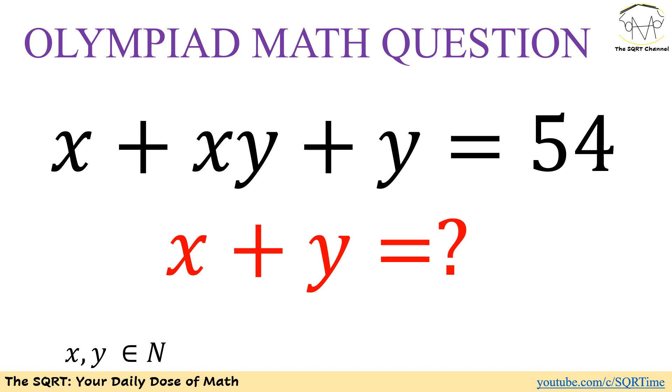In the problem that we have, we just have one equation and two variables. We know that x plus xy plus y is equal to 54. And we also know that x and y are positive integer values. We are going to find sum of x plus y.